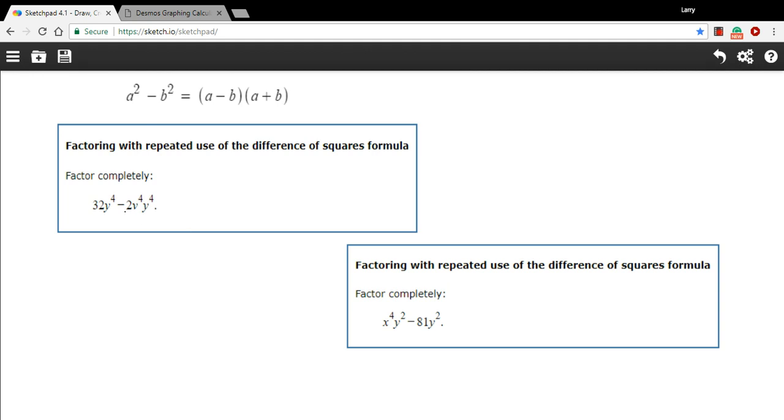So a 32 and a negative 2, I can factor out a 2 there, so I'm going to do that. And then also, both terms have a y to the fourth, so I can bring that along as well. So 2y to the fourth comes out of here. When I divide this first term by 2y to the fourth, I just get 16 left. When I divide the second term by y to the fourth, what I just get is v to the fourth.